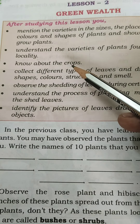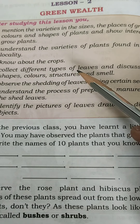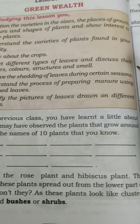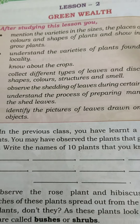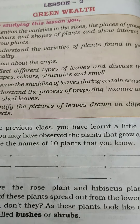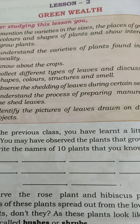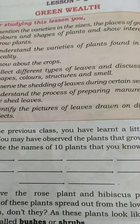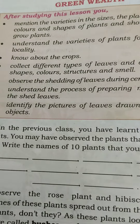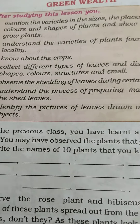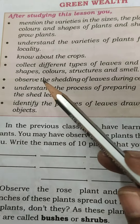Now, about the crops. Collect different types of leaves and discuss their shapes, colors, structures, and smell. You will learn about different types of leaves — ones on trees and ones on plants — so varieties change. You collect and discuss their shapes, colors, structure, and smell.